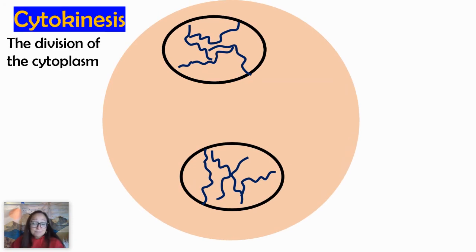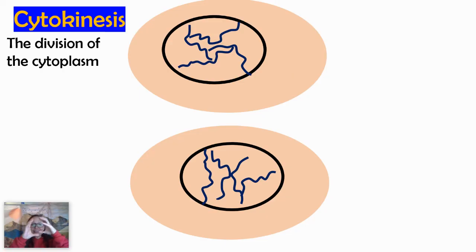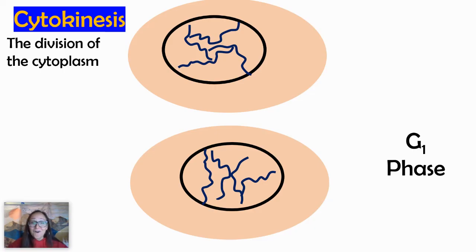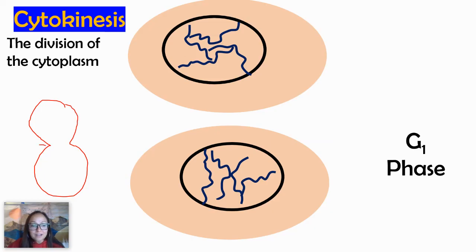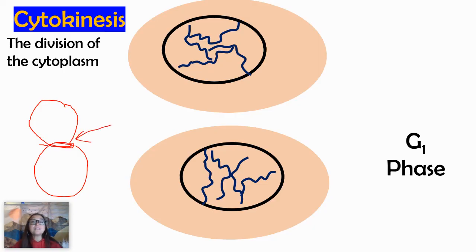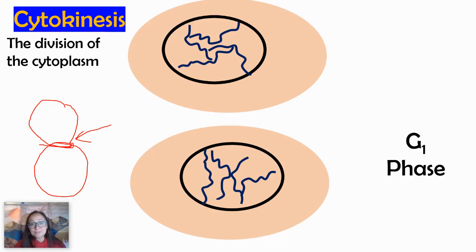In cytokinesis, it's basically the division of the cytoplasm, dividing it into two identical daughter cells. These cells are then back in G1 and can start the cell cycle all over again. For animal cells, there is a microtubule ring that forms to pinch the cytoplasm in half — this location is called the cleavage furrow. If it's a plant cell, it'd be called a cell plate, which forms between the two nuclei.